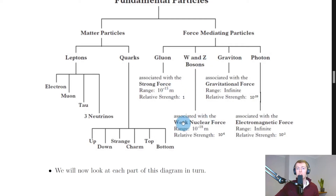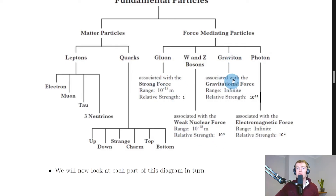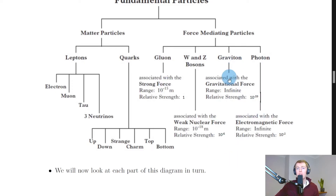The W and Z bosons are associated with the weak nuclear force and have a range of about 10 to the minus 18 meters and a relative strength of about 10 to the minus 6 compared to the strong nuclear force. The graviton is associated with the gravitational force and has an infinite range but the smallest relative strength of about 10 to the minus 39. Importantly, the graviton is a hypothetical particle — it has not yet been discovered.